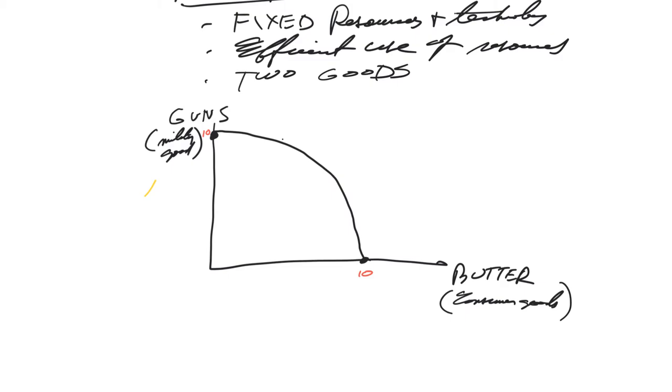Now the reason it's bowed out, that is to model the fact that not all resources are equally suited for all types of production. That's something we'll talk about a little later. I'll give you an example that kind of knocks that in for you.